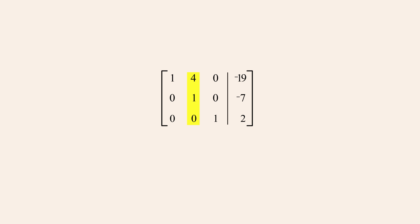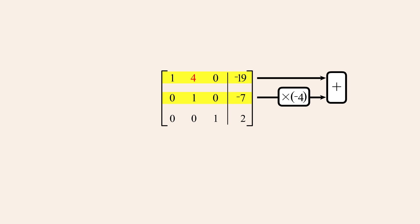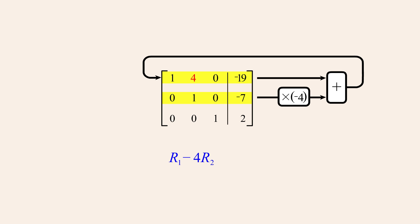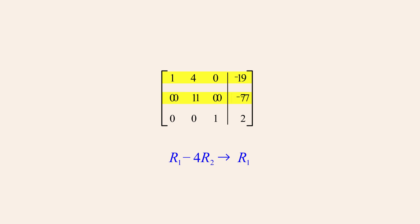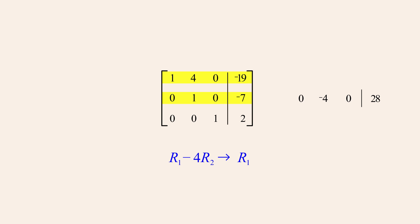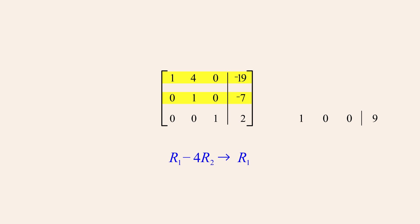Now that all the entries above the 1 in the third column are zero, we move over to the second column, where the entry above the 1 in that column must be changed to zero. Once again we use a pivot operation adding negative 4 times row 2 to row 1, replacing row 1. We notate this by writing R₁ minus 4 times R₂, followed by an arrow and R₁. Multiplying row 2 by negative 4 and adding that multiple of row 2 to row 1, we replace row 1 with the result.